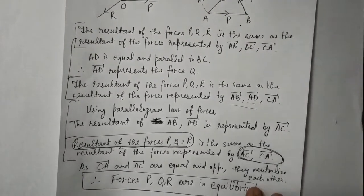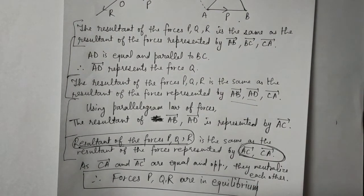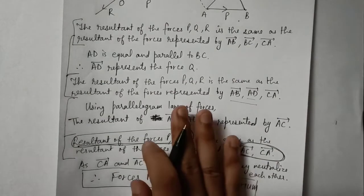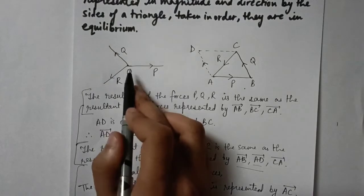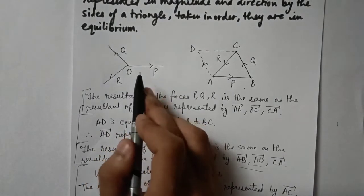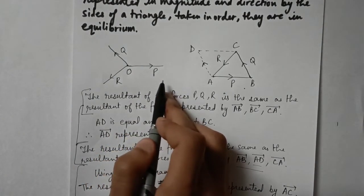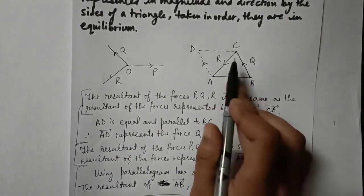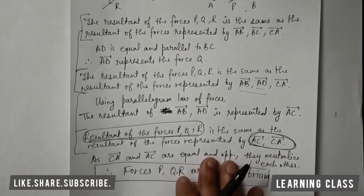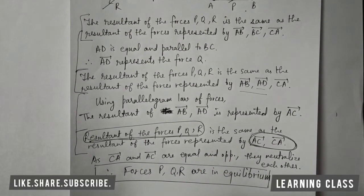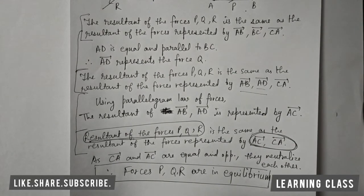This is what we needed to prove, and we have proved it: if three forces acting at a point can be represented in magnitude and direction as the sides of a triangle, those three forces will be in equilibrium. I hope you understand how this law has been proved. If you have any doubt, you can ask me in the comment section. Goodbye everybody.